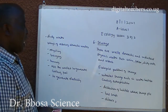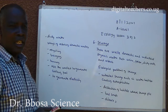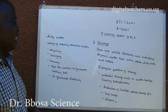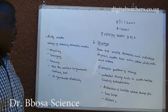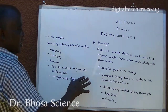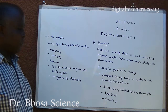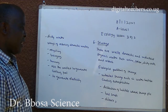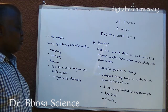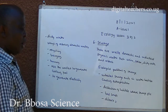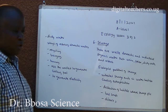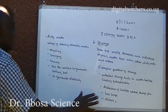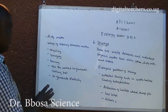Six: sewage. These are waste domestic and industrial organic matter such as urine, feces, dirty water, and rubbish. Ecological problems of sewage: untreated sewage ends up in water bodies causing eutrophication; destruction of habitats where sewage flows; bad smell; diseases; and dirty water.